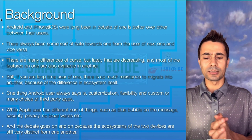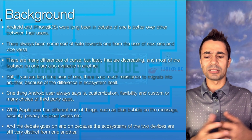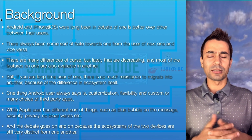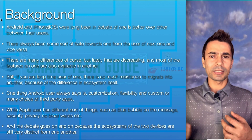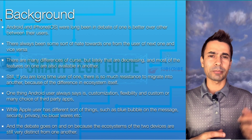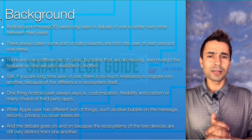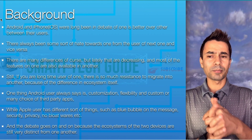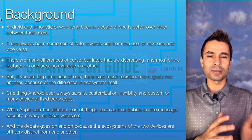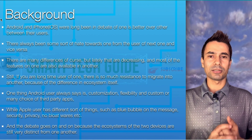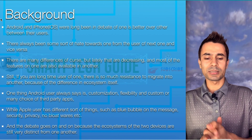iPhone users brag about different things, like the blue bubble on the messaging app, security, privacy, and of course no bloatware on the iPhone. If you buy a new Android device from a carrier like AT&T or Verizon, it comes with carrier bloatware — AT&T apps or Verizon apps that you cannot even uninstall. But when you buy an iPhone, even from Verizon or any carrier, it doesn't come with that. So those are the things that iPhone and Android users debate most of the time, and the debate goes on because the ecosystems are so different.